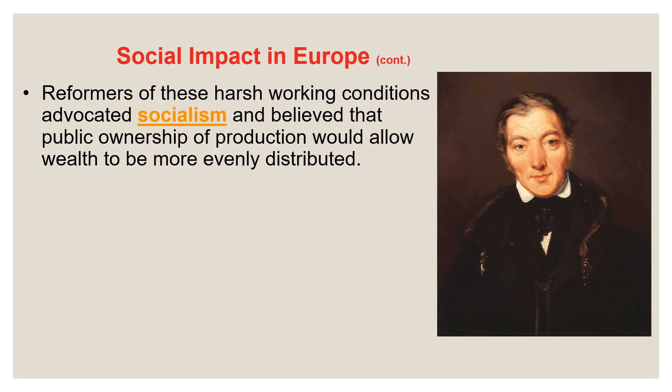It was reformers that wanted to make changes to these harsh working conditions — people working 16-hour days with a 15-minute break, working in terrible conditions, putting their lives at risk. They advocated socialism, believing that public ownership of the means of production — meaning the factories and machines — would allow wealth to be more evenly distributed. The advocates of socialism were ones that advocated communal ownership of the factories rather than capitalists owning them.